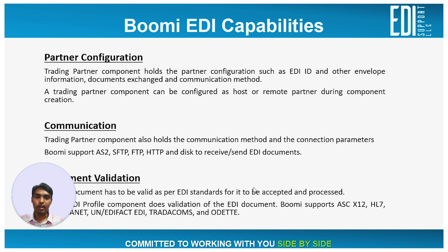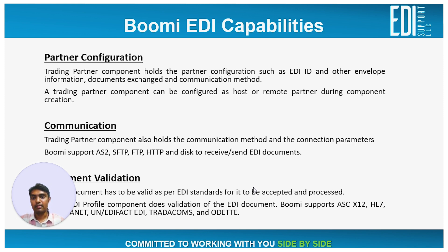In Boomi, trading partner details are configured in the trading partner component, where the envelope information, documents exchanged, and communication settings are maintained. When a document is received at the Boomi EDA server, the processor identifies the EDI document using the EDI ID and qualifier. If there is no valid trading partner configuration present in the Boomi EDA server for the document received, the integration would fail as it could not recognize the document.